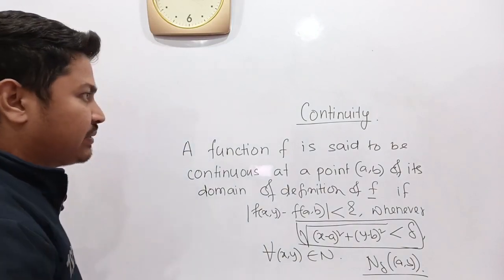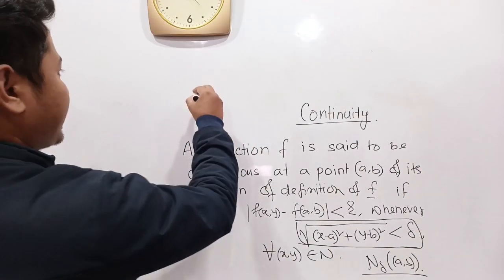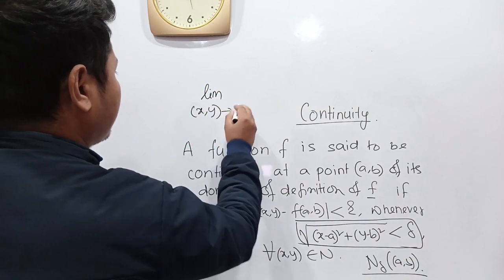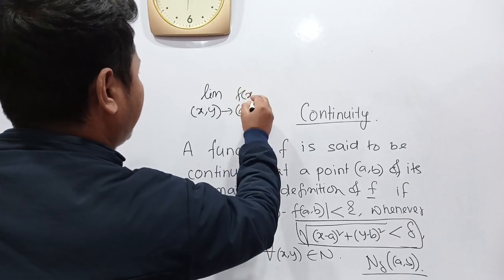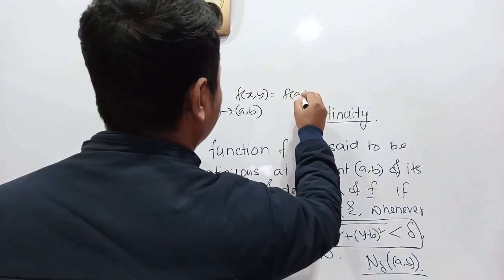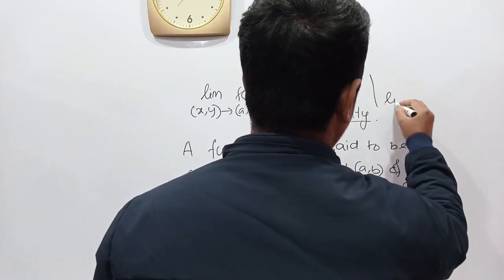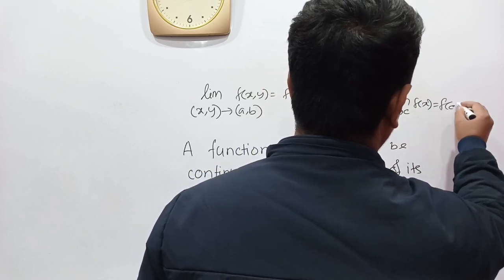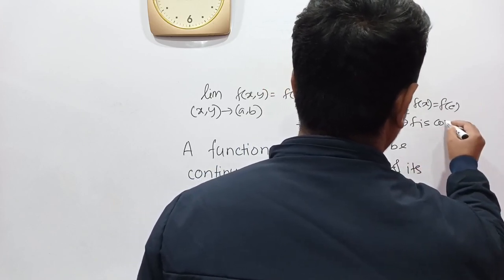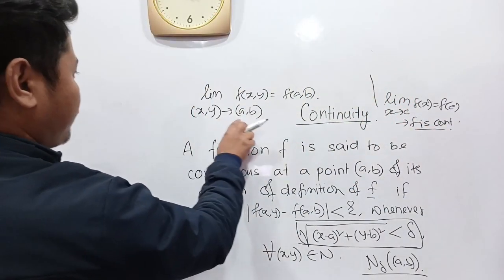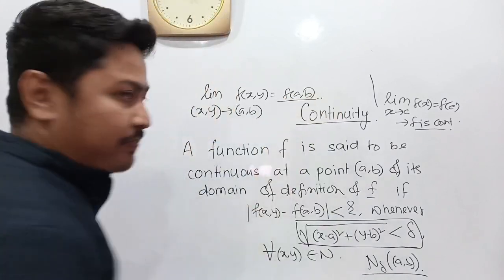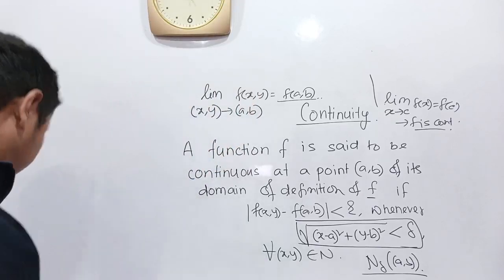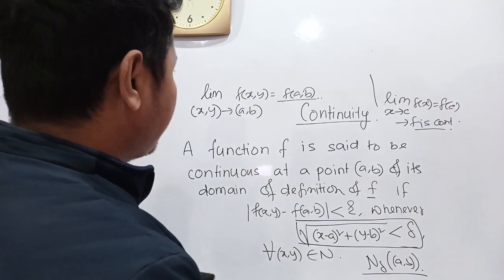In short, the condition for continuity is: limit as (x,y) approaches (a,b) of f(x,y) equals f(a,b). Similarly, for a function of one variable, limit as x approaches c of f(x) equals f(c). So for two variables, if limit as (x,y) approaches (a,b) of f(x,y) equals f(a,b), then the function is continuous.